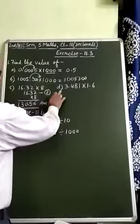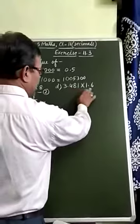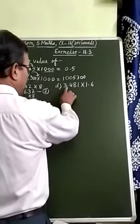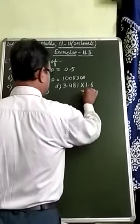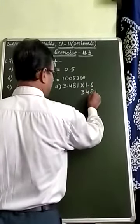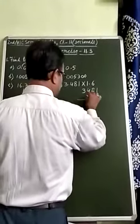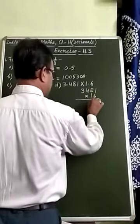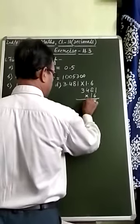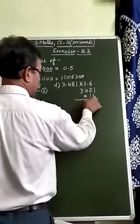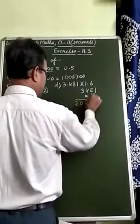Look at D1, 3.481 into 1.6. Again, ignore decimal point and write as whole number, 3, 4, 8, 1 and here it is 16. Multiply them: 1, 6's are 6. 8, 6's are 48. 4, 6, 4's are 24, plus 4, 28. 2, 6, 3's are 18, plus 2, 20.